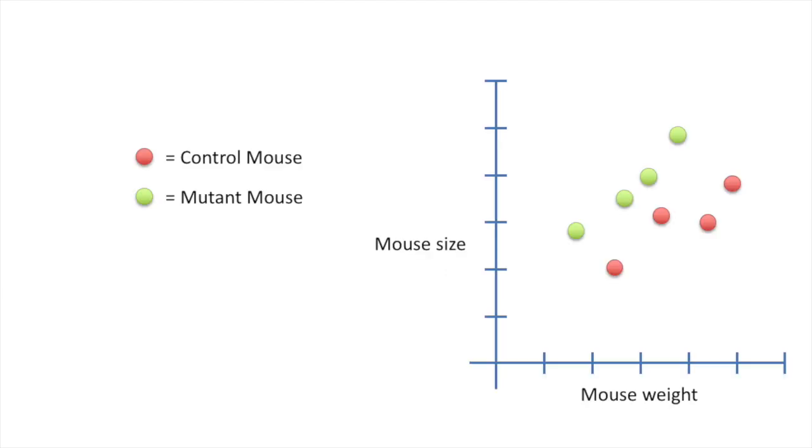In the original StatQuest, we were interested in determining if there was a statistically significant difference between the size of control mice versus the size of mutant mice, given that we had measured their weights. We ended up with this equation: y equals the control intercept plus a mutant offset plus the slope. This equation fits two lines to the data, one for the control mice and one for the mutant mice. Now let's see how we can test the hypothesis that there's no difference between control mice and mutant mice using R.